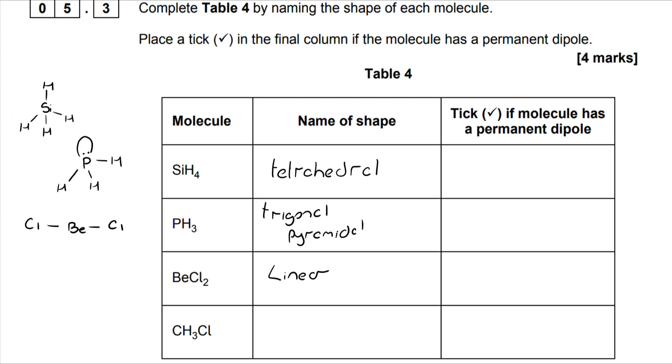BeCl2 is linear because beryllium is group two, two electrons in the outer shell, so it makes two bonding pairs, no lone pairs, linear 180.